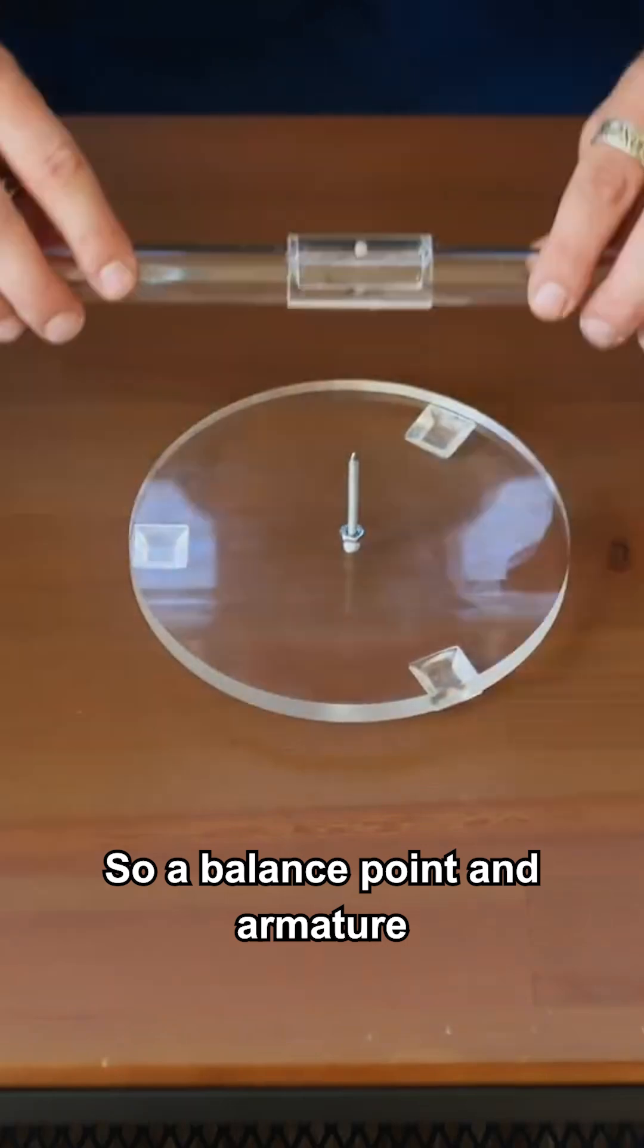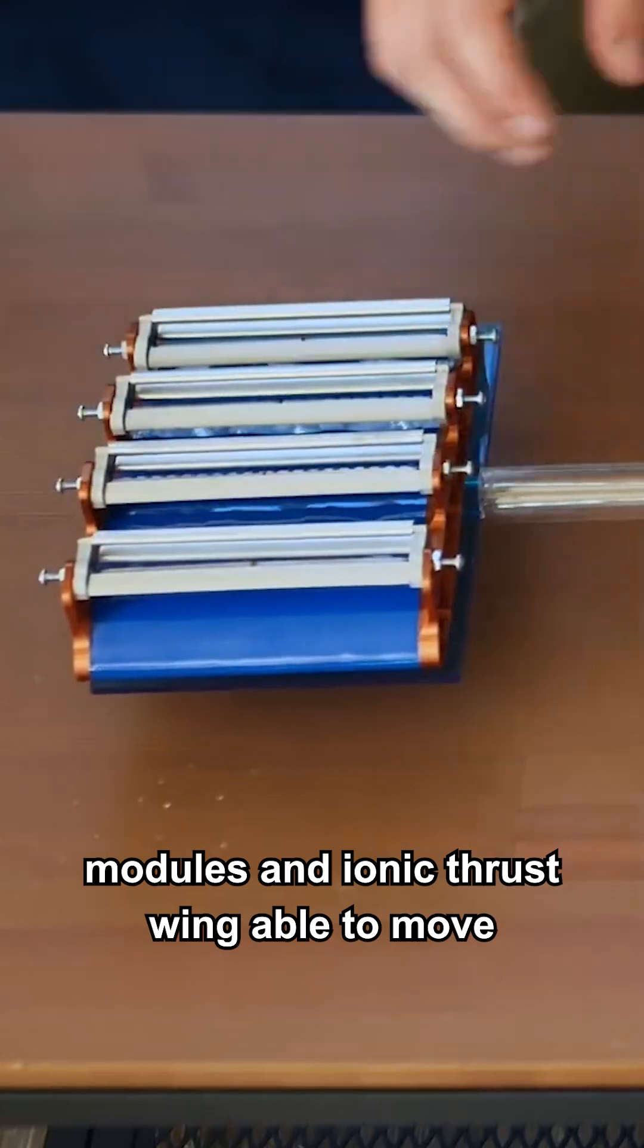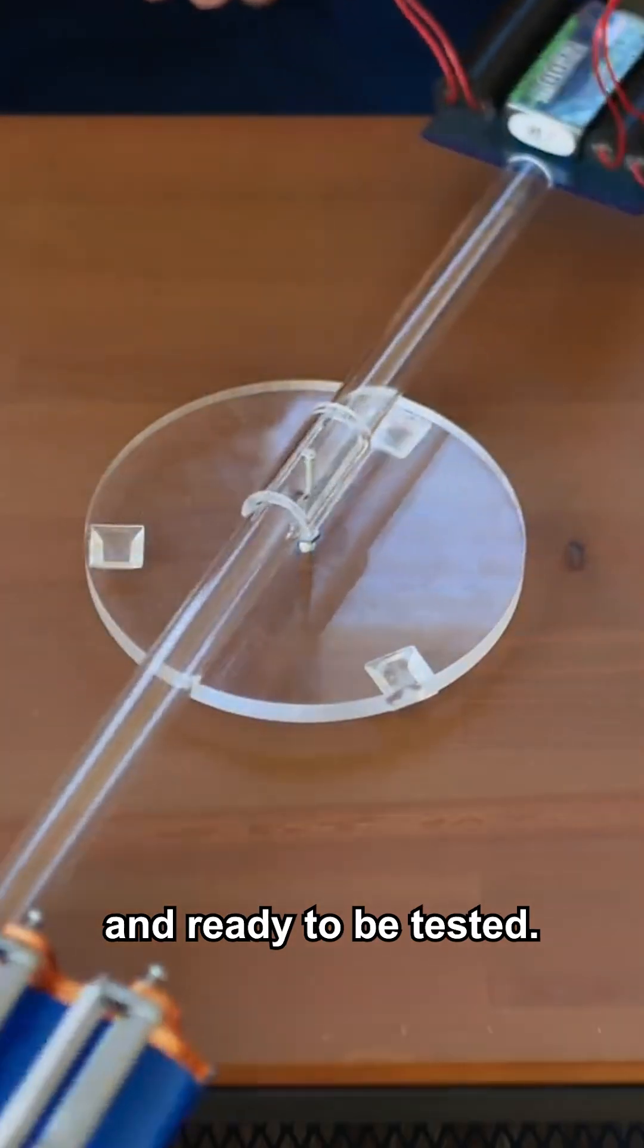So, a balance point, an armature, power source and high-voltage modules, and ionic thrust wing able to move freely from the ground and ready to be tested.